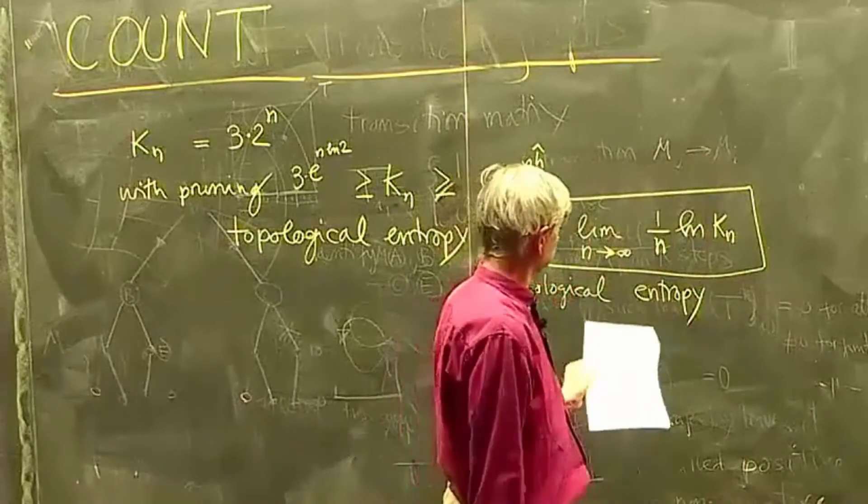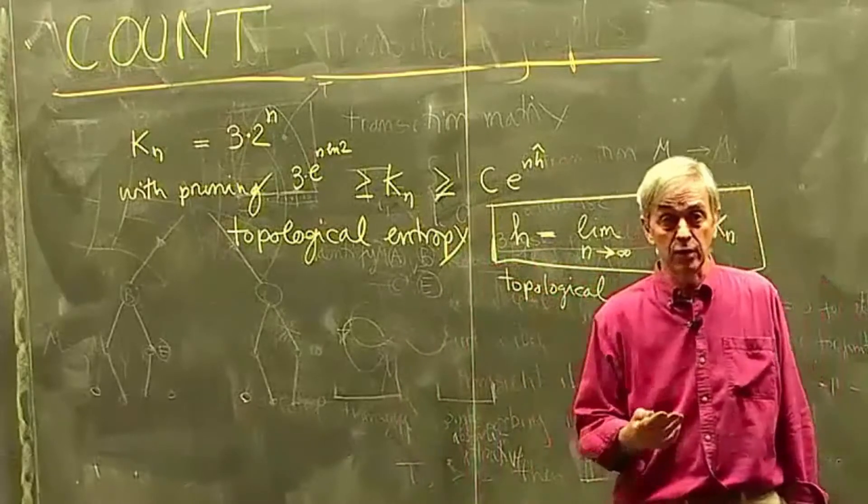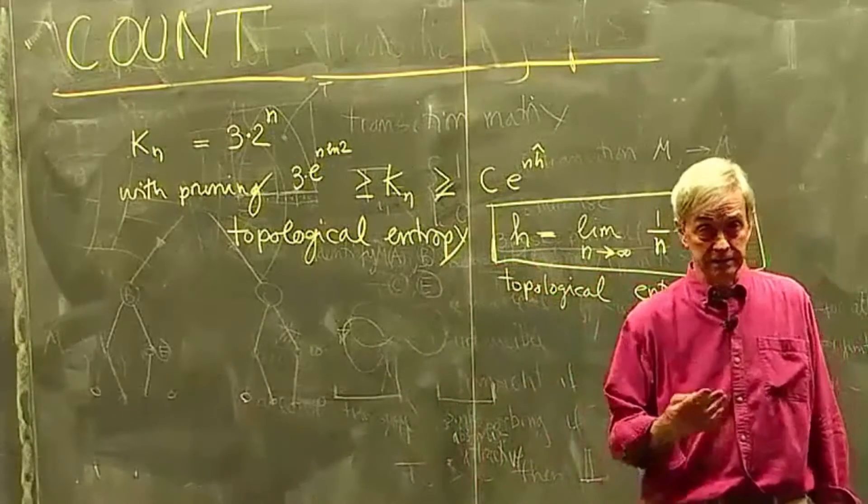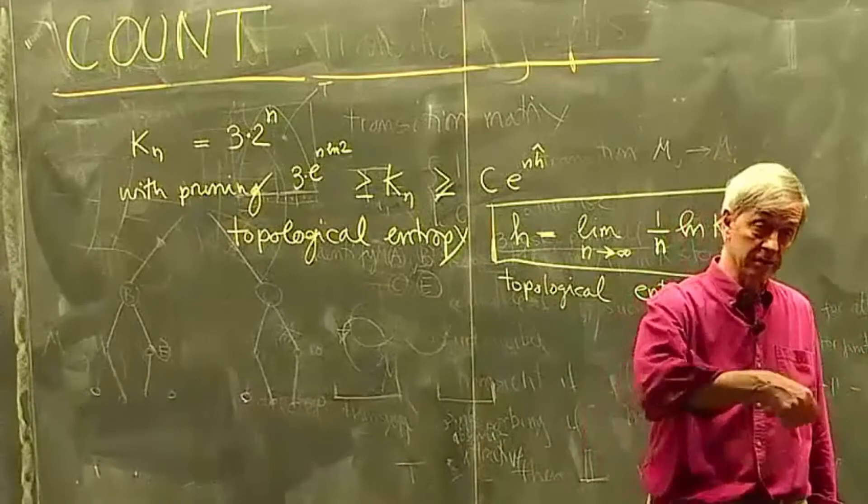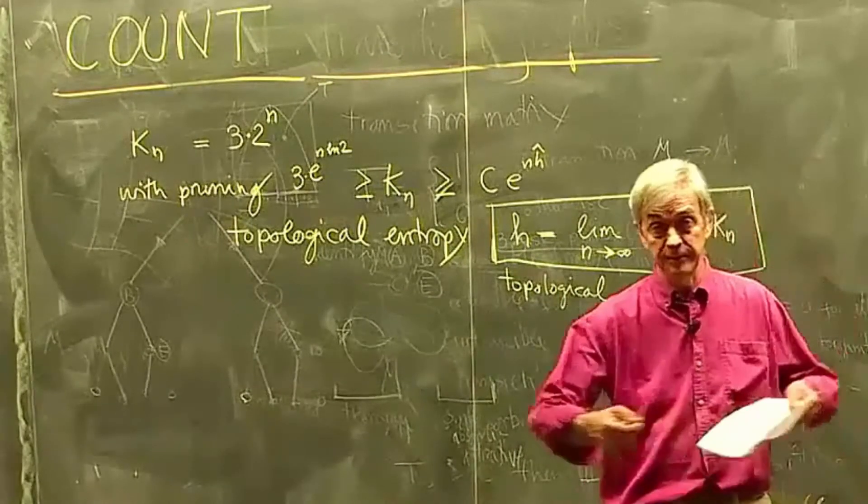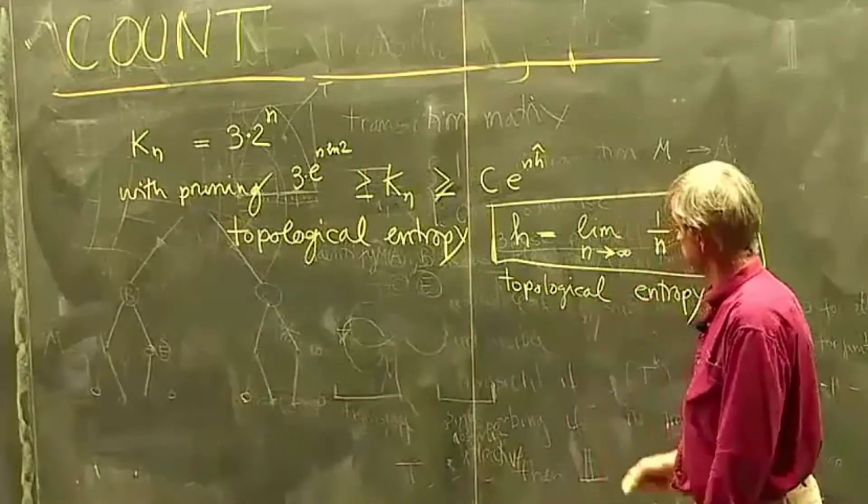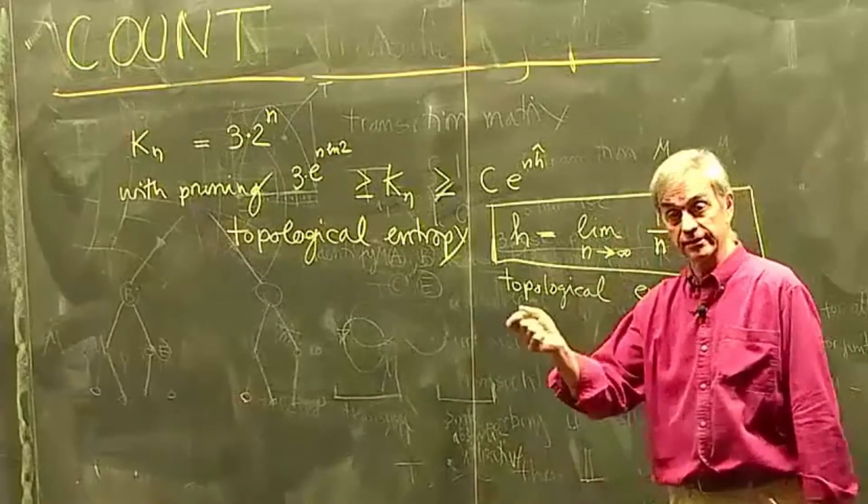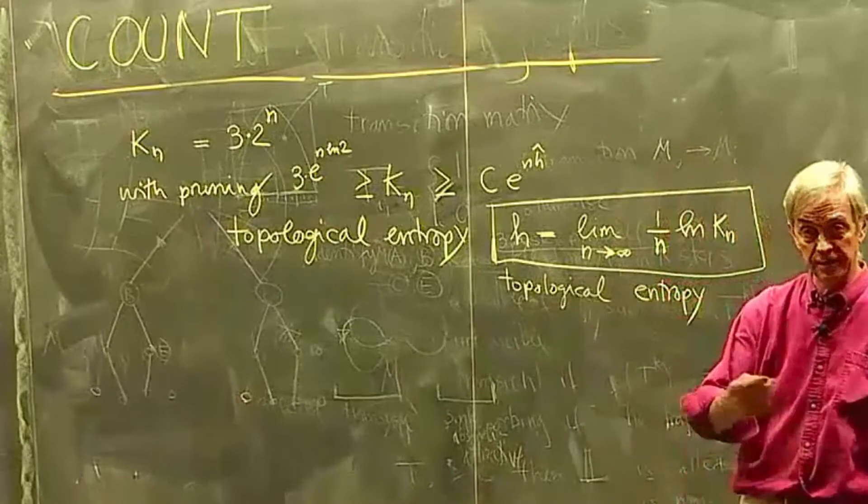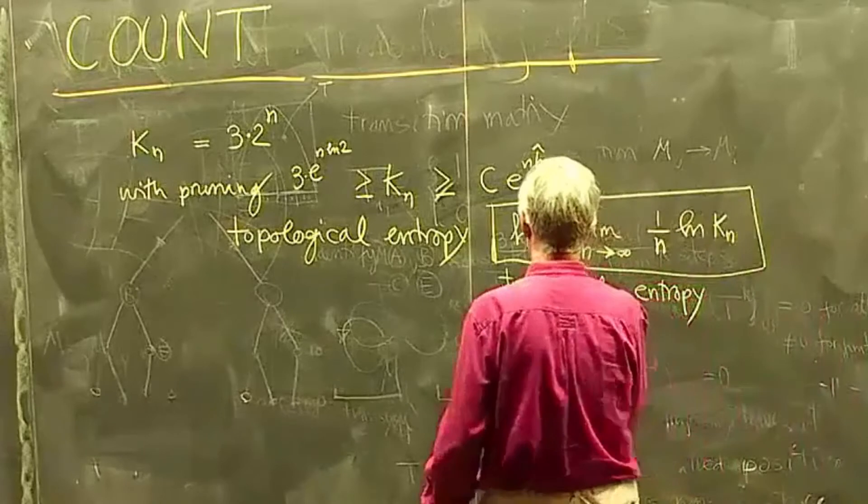Where this number is logarithm of number of configurations, now number of trajectories, divided by the thermodynamic limit size of the system, in which this is one dimensional strings divided by the length, the number of steps at a time. So that's what it is called topological entropy.